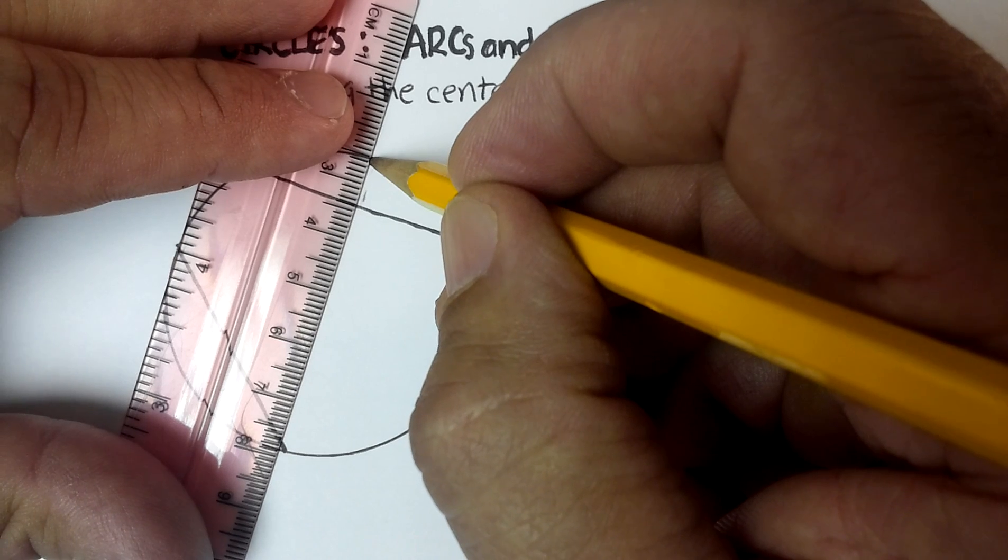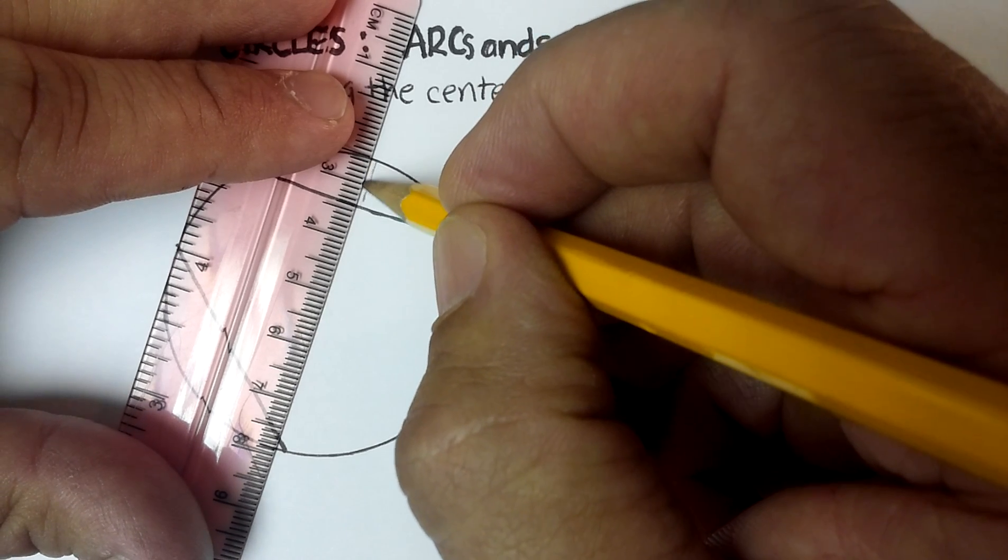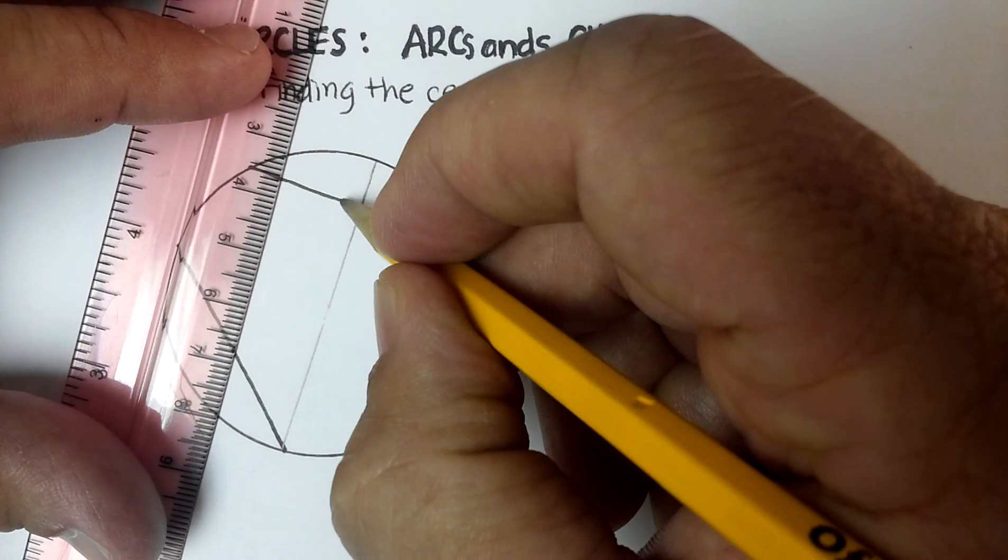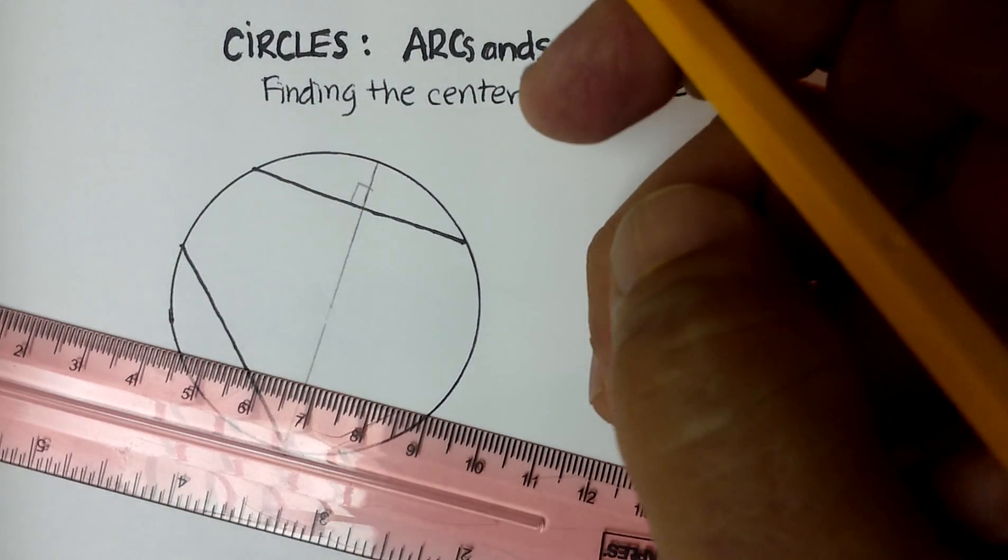Alright, so let's go ahead and draw a 90 degree angle, and there we go. And basically now that is a 90 degree angle, there's a perpendicular bisector.